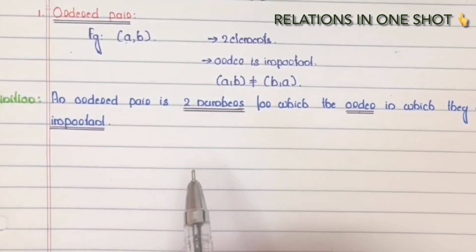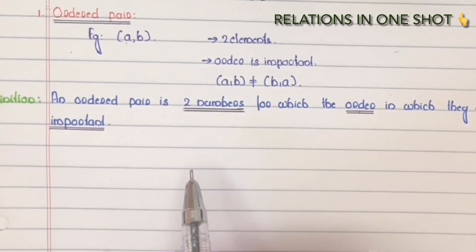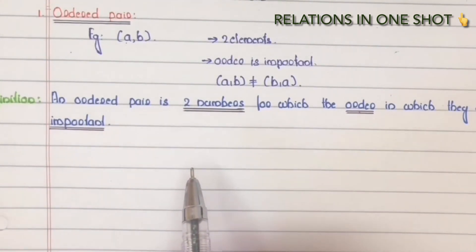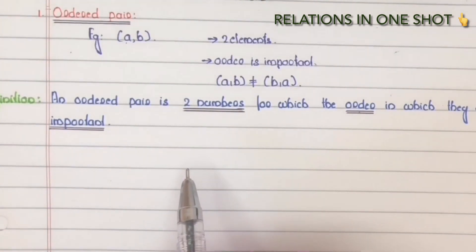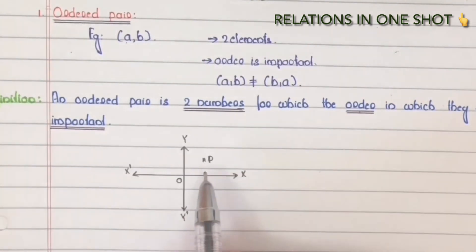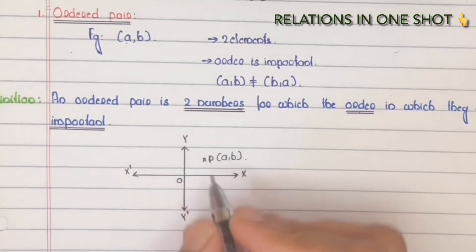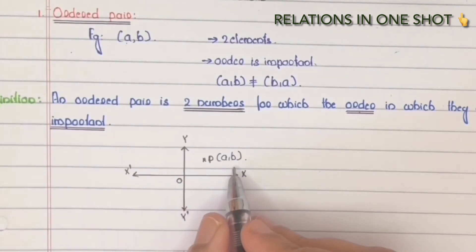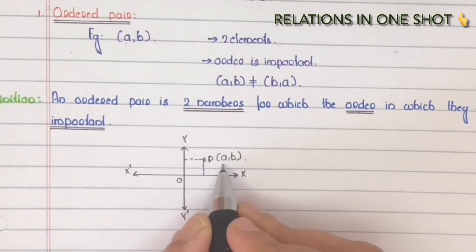For example, consider the coordinate of a point in the XY plane. In the XY plane, one point's coordinates are represented as an ordered pair. Point P, we represent as ordered pair (A, B).